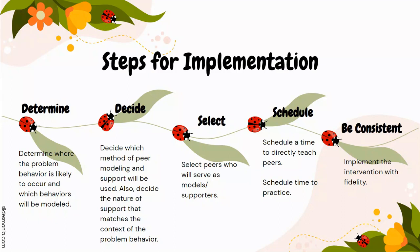Explanation, rationale, modeling, role-playing, and feedback should be used during the teaching sessions. Depending on the age of the students, several teaching sessions may be necessary. Teaching sessions for younger peers — students younger than second grade — should be fairly short in duration and will need to be repeated. Schedule a time to practice with the target peer as well, best achieved by setting up a simulation like the context in which the modeling or support will be provided. Provide feedback to the target peer and the modeling peers as they practice the intervention.